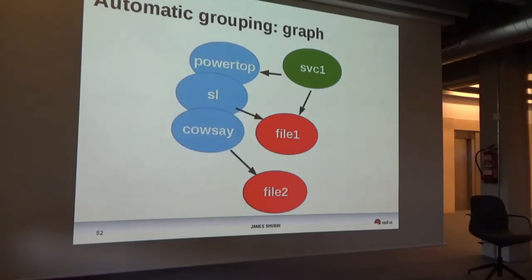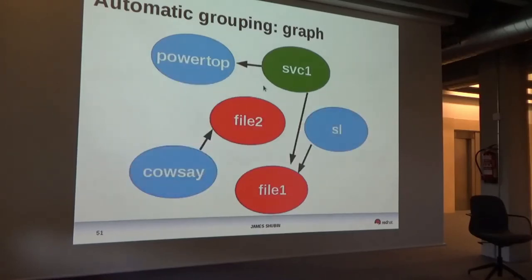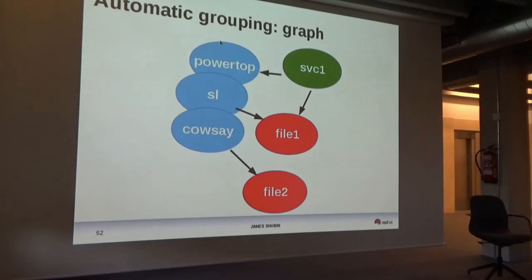What we actually do in MGMT is analyze the graph dynamically as part of the core engine, and using some algorithms we can rearrange the graph to group all three package resources into the same bubble. The arrows still preserve the same dependency requirements. The difference is we do this as a single operation, which makes things way faster because we only ask the package manager once. You can disable this per-resource if you want.